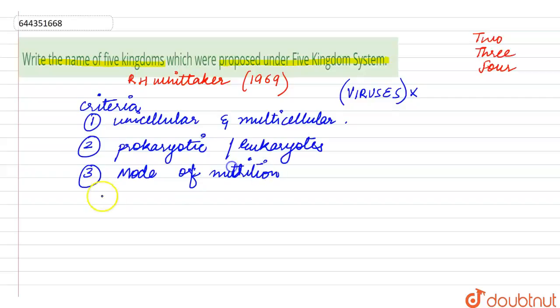The fourth one is the phylogenetic relationship, that means the evolutionary relationships of various organisms. Also, the ecological status was taken into consideration, whether the organism is a producer, consumer, or a decomposer.